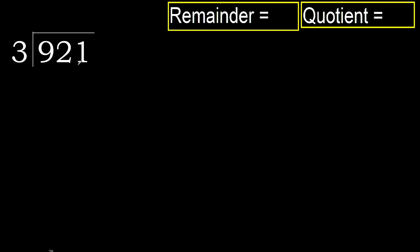921 divided by 3. 9 is not less, therefore start with 9. 3 multiplied by which number is nearest to 9 but not greater? 3 multiplied by 4 is 12, which is greater. 3 multiplied by 3 is 9, which is not greater.